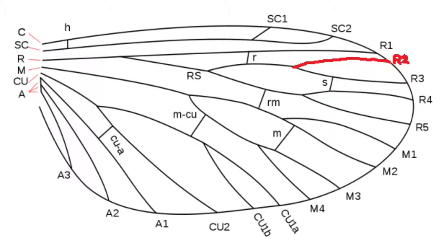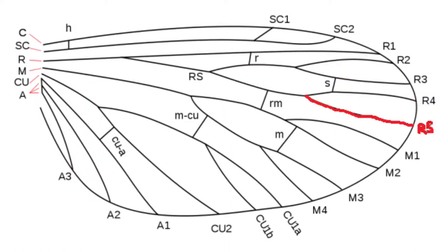The radial sector then splits into four veins, R2, R3, R4, and R5. It gets much easier after this, so don't feel discouraged now.